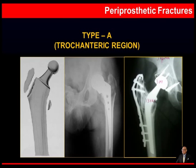For type A fractures — fractures occurring in the trochanteric region — you can fix these with a trochanteric plate, screws, a tension band, or using the tension band principle.